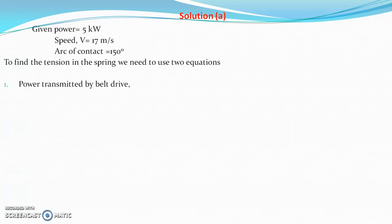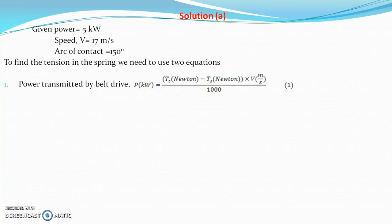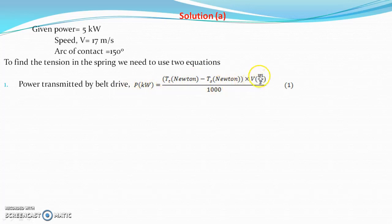The first equation is the power transmitted by belt drive, which depends on the tension difference between the tight side and slack side: (TT minus TS) in Newton, into velocity in meter per second. Newton times meter per second is watt, divided by 1000 is kilowatt. So you can easily calculate this — that is the first equation.